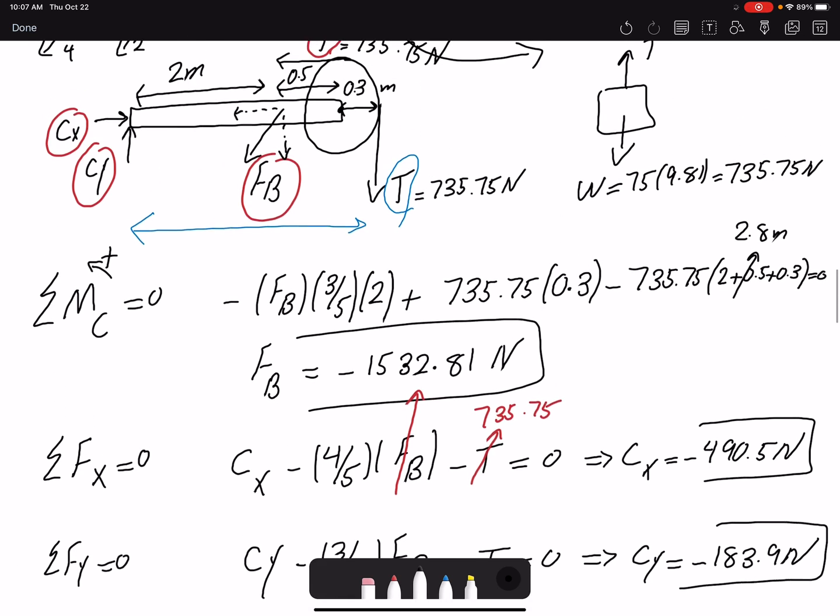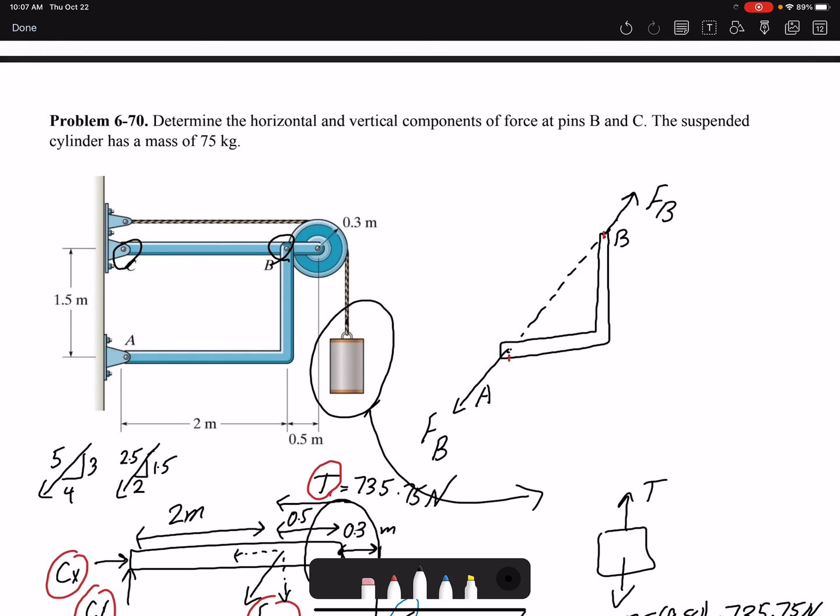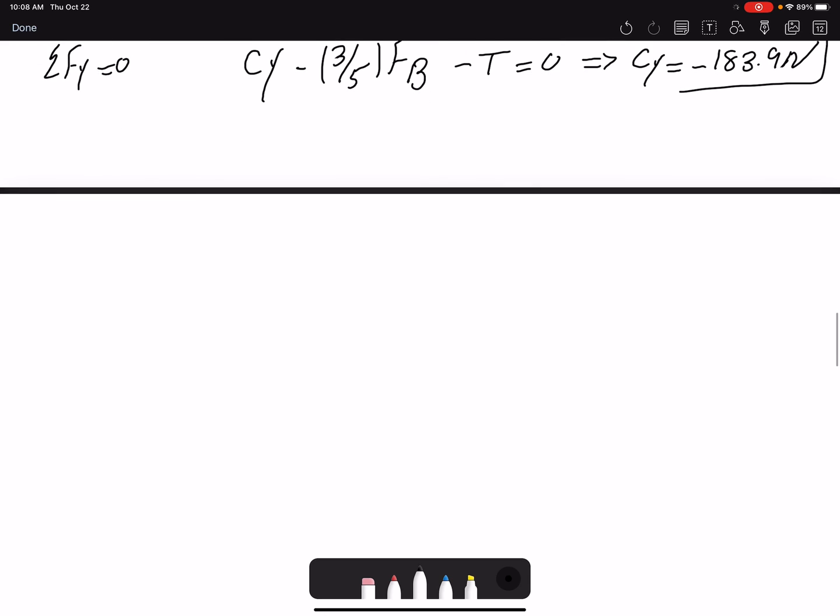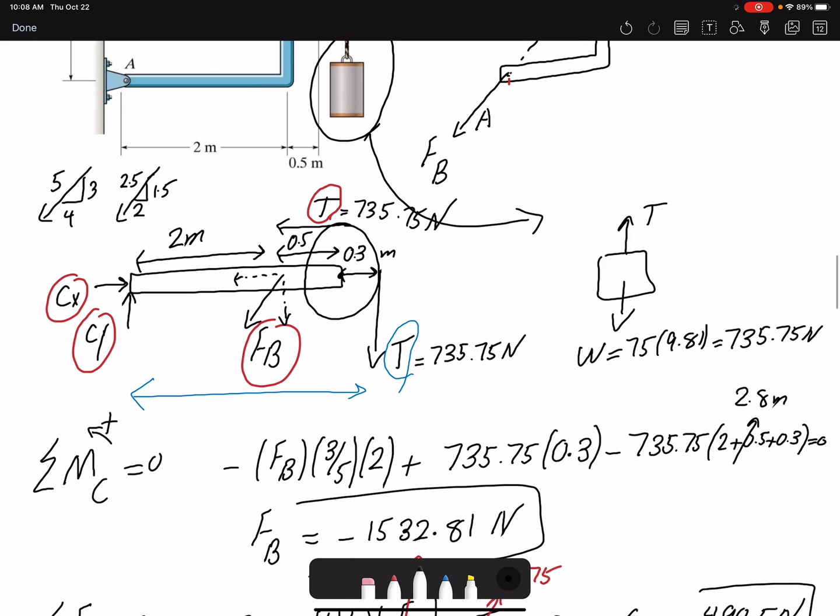So now that I have the value for FB, the problem is asking for components for FB. So if I want to, I have the dimensions, I can find the X and Y component, the horizontal and vertical component of FB. So I write it here, BX, the magnitude. The value that we found for FB was a negative value, so the actual value here would be positive.